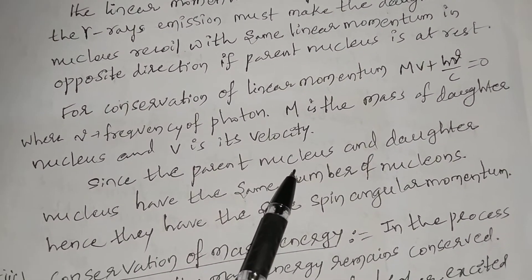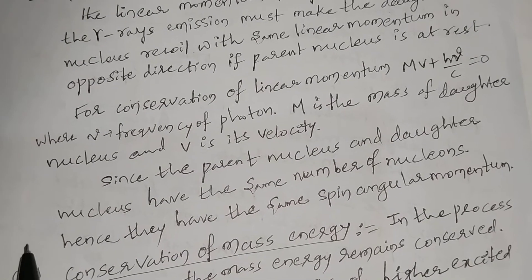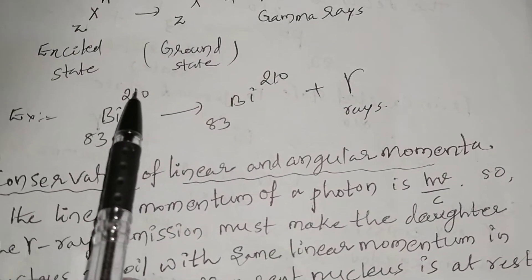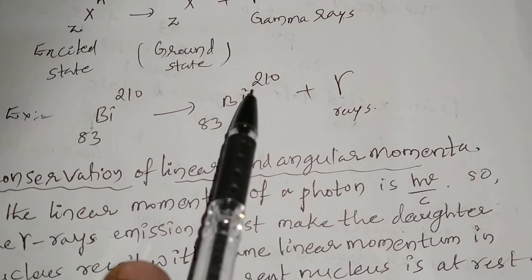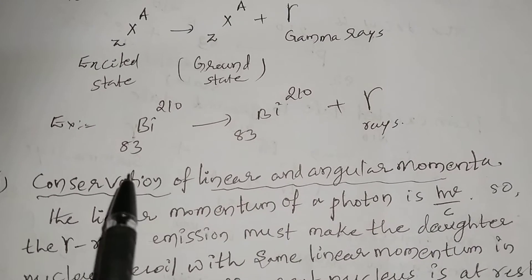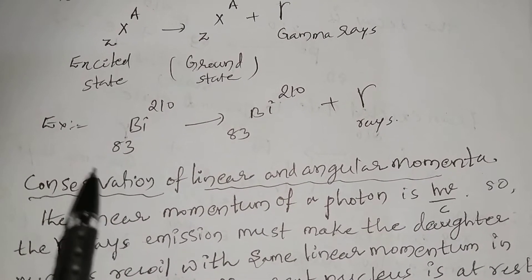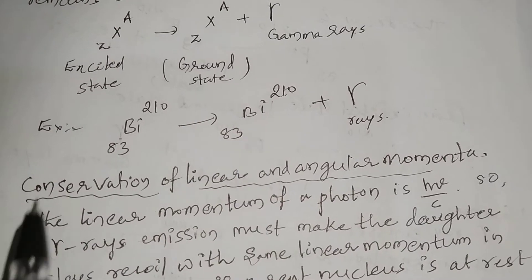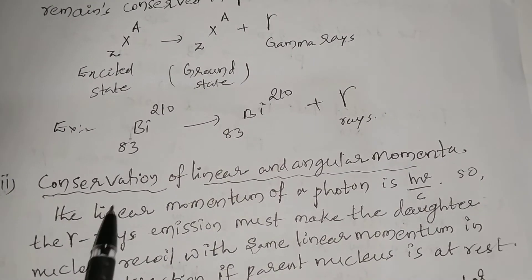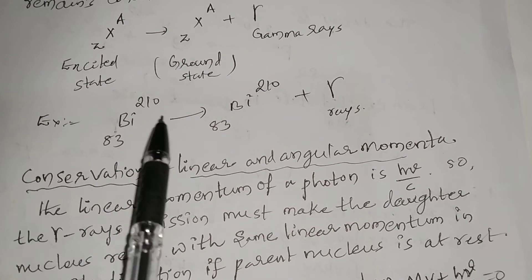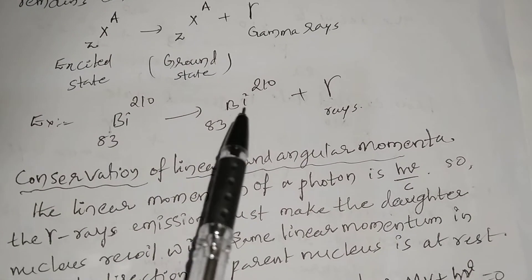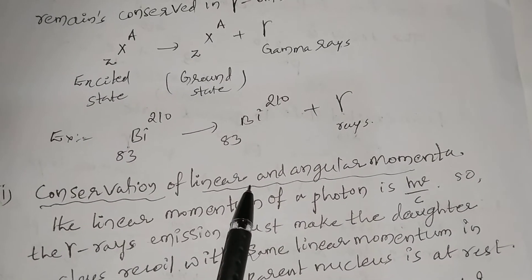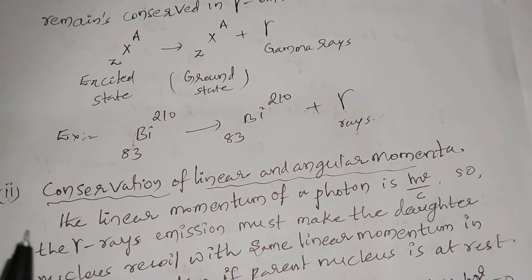Since the parent nucleus and the daughter nucleus have the same nuclear number, they have the same spin angular momentum. The nuclear number of the parent nucleus equals the nuclear number of the daughter nucleus, meaning the spin of the nucleons of the parent nucleus equals the spin of the nucleons of the daughter nucleus. Therefore, the sum of spins of nucleons of the parent nucleus equals the sum of spins of nucleons of the daughter nucleus, and spin is conserved.